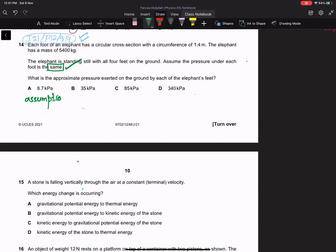If we take g as 10, then pressure is weight over area, and weight will be distributed equally on all four feet. So as a result, 5400 into 10 newton divided by 4.